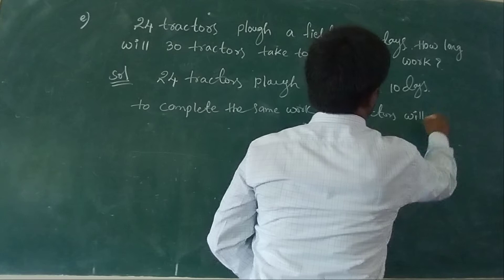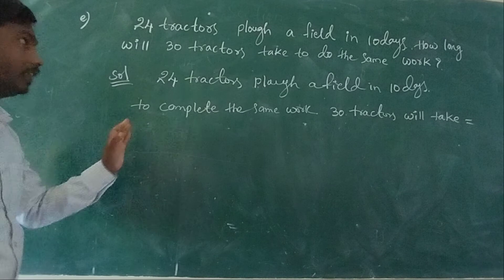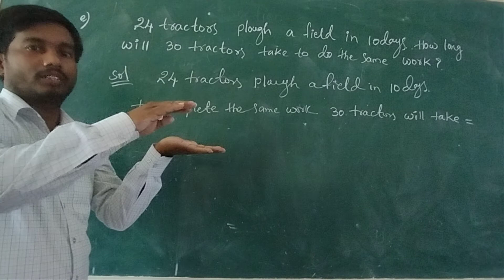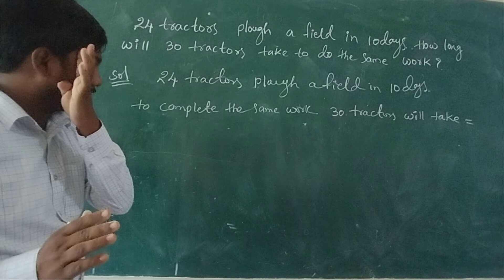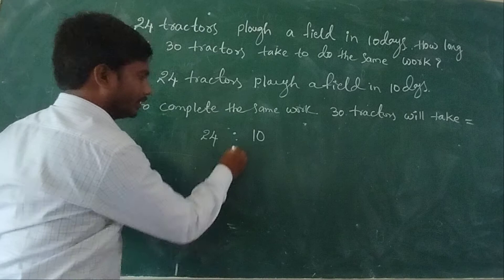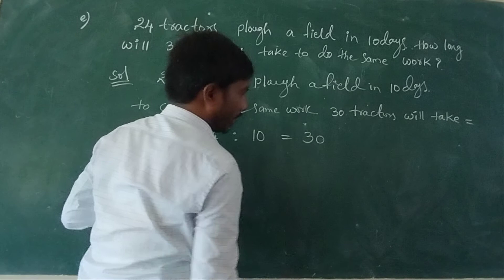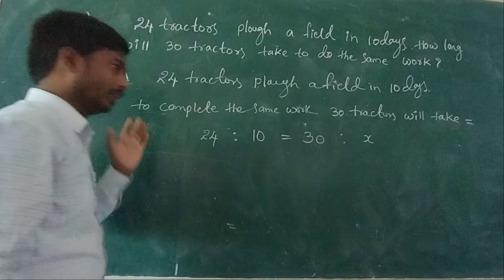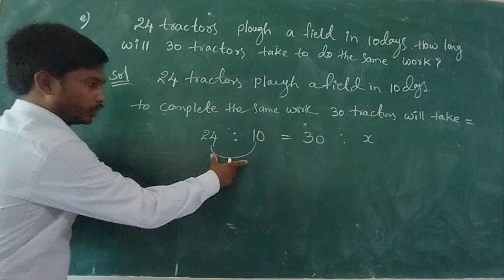30 tractors will take — now, when the number of tractors increases, the number of days will automatically decrease. So this is called indirect variation. When the number of tractors is 24, the number of days is 10. When the number of tractors is 30, the number of days is X.